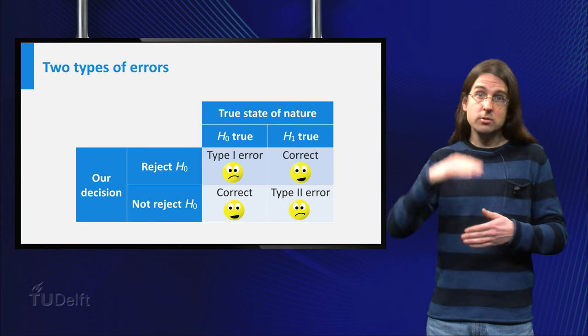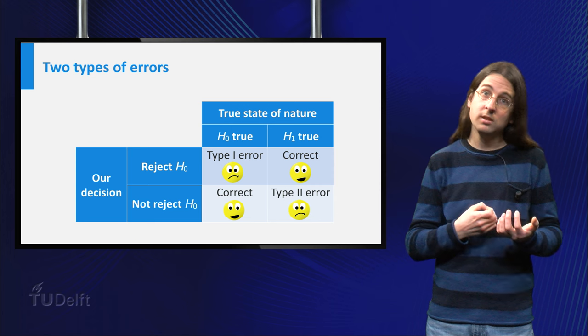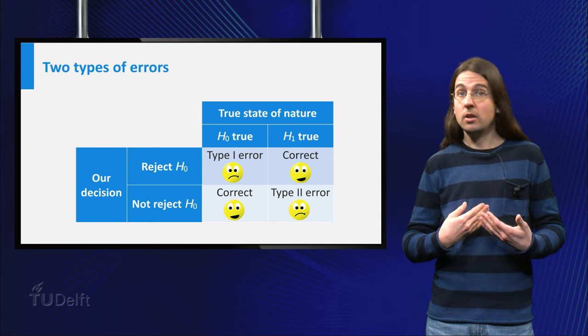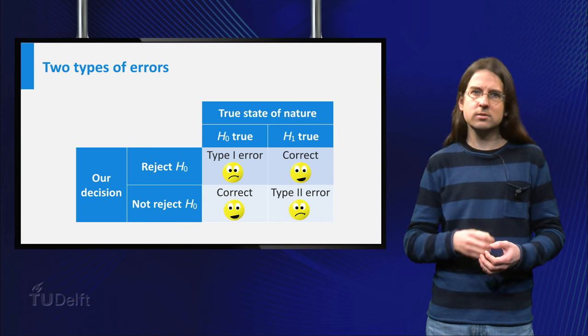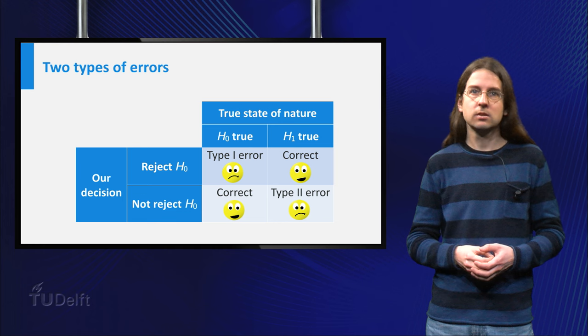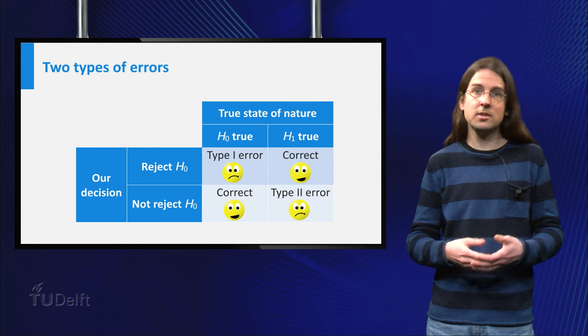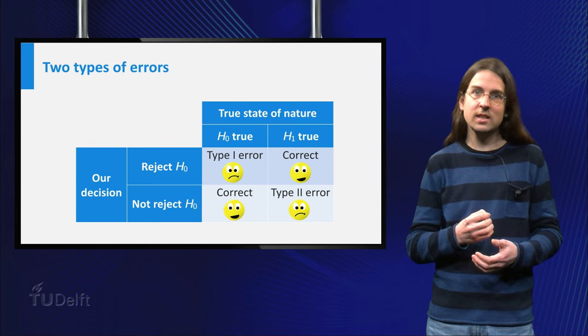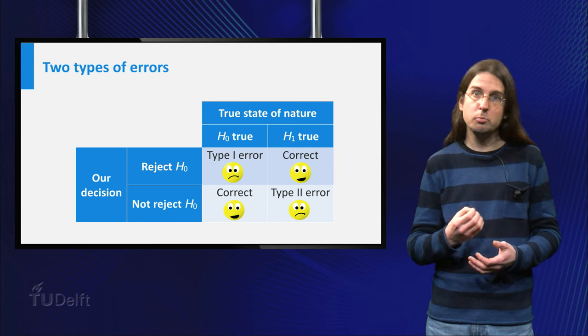On the other hand, if you choose a high value of X, you will make fewer errors of type 1 but more of type 2. There are no absolute rules what choice you should make, and you should always consider the consequences of an error. Raising dikes if the sea level does not rise is unnecessarily costly, but not raising the dikes while the sea level does increase could cost thousands of lives and would be worse.